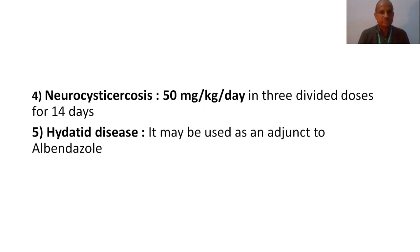One more condition: neurocysticercosis, which occurs in the CNS. The dose given is 50 mg per kg per day in three divided doses for at least two weeks, that is fourteen days. For hydatid disease, praziquantel may be used as an adjuvant along with albendazole.